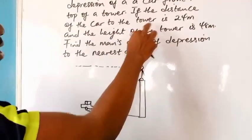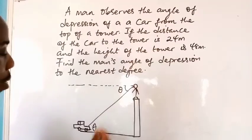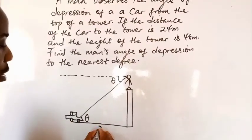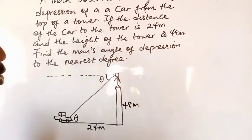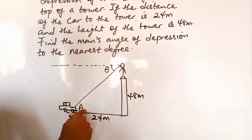So we're told that the distance of the car to the tower, that's from here to here, is 24 meters. And the height of the tower is 48. So we are asked to find his angle of depression, that's theta.